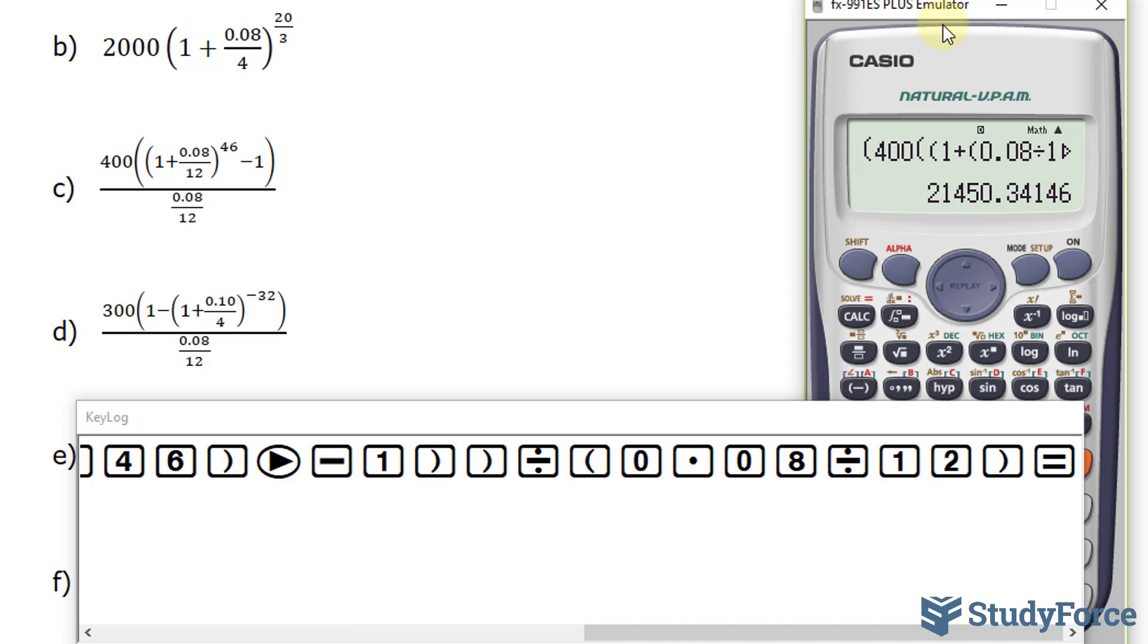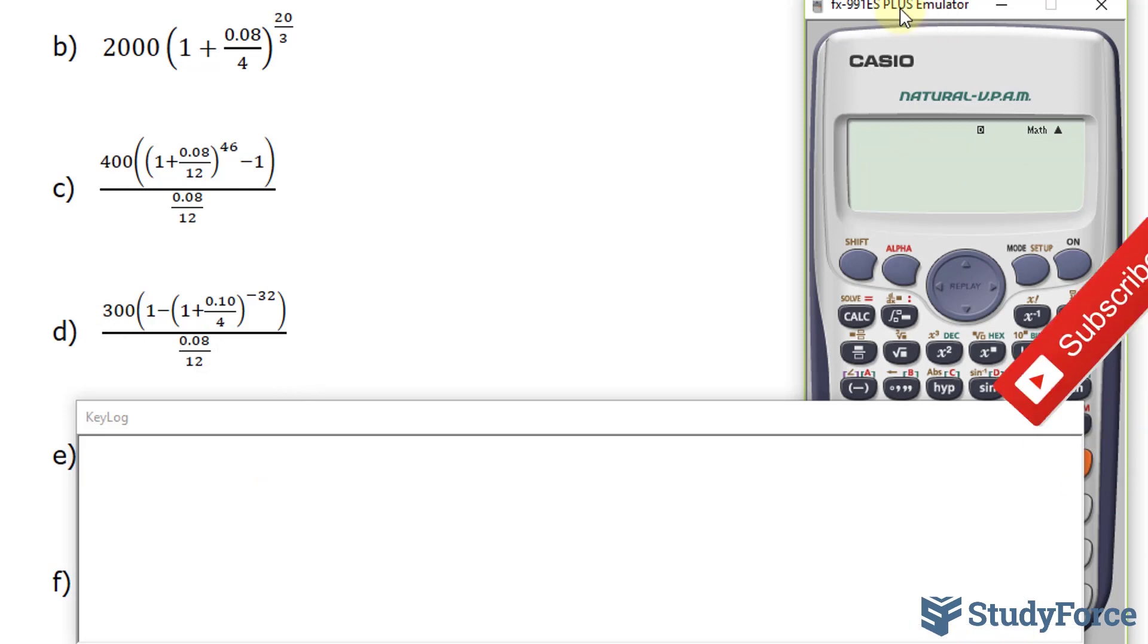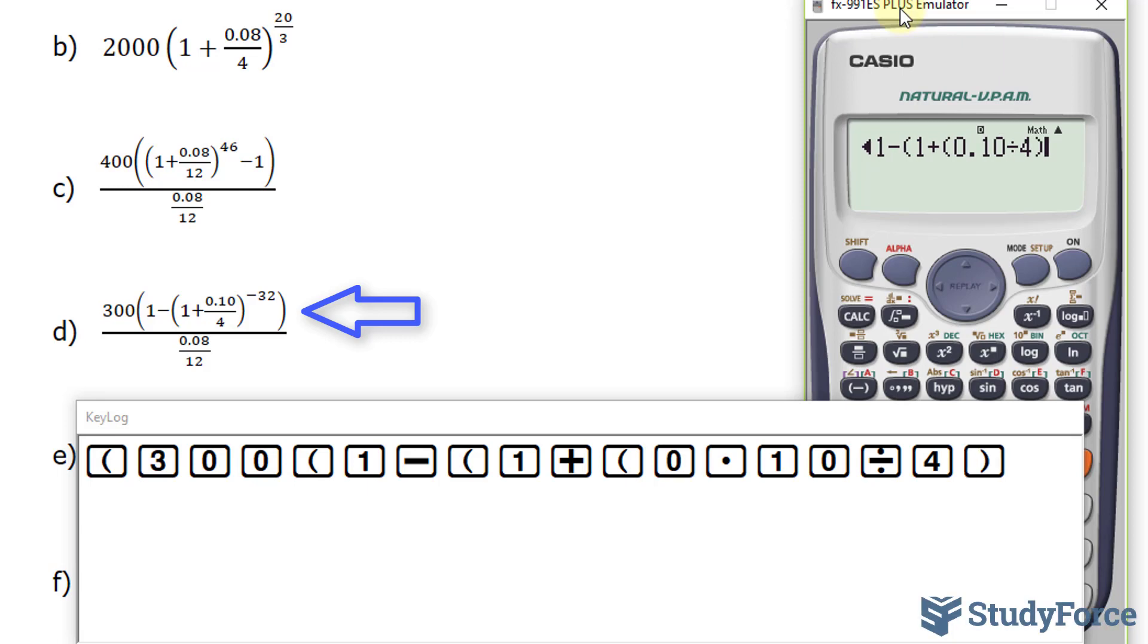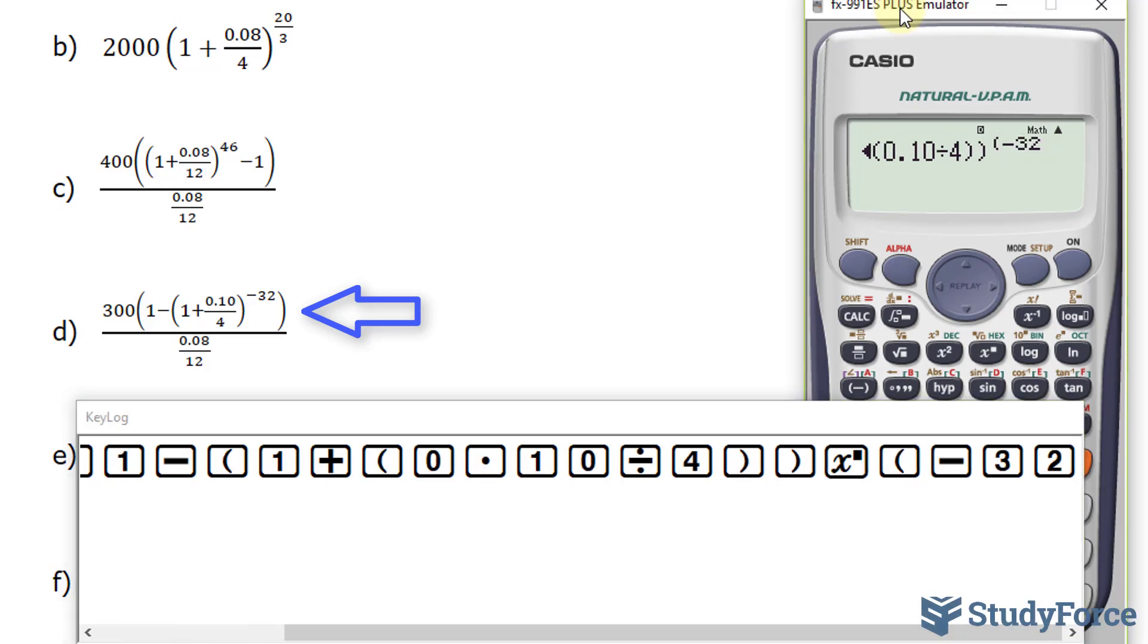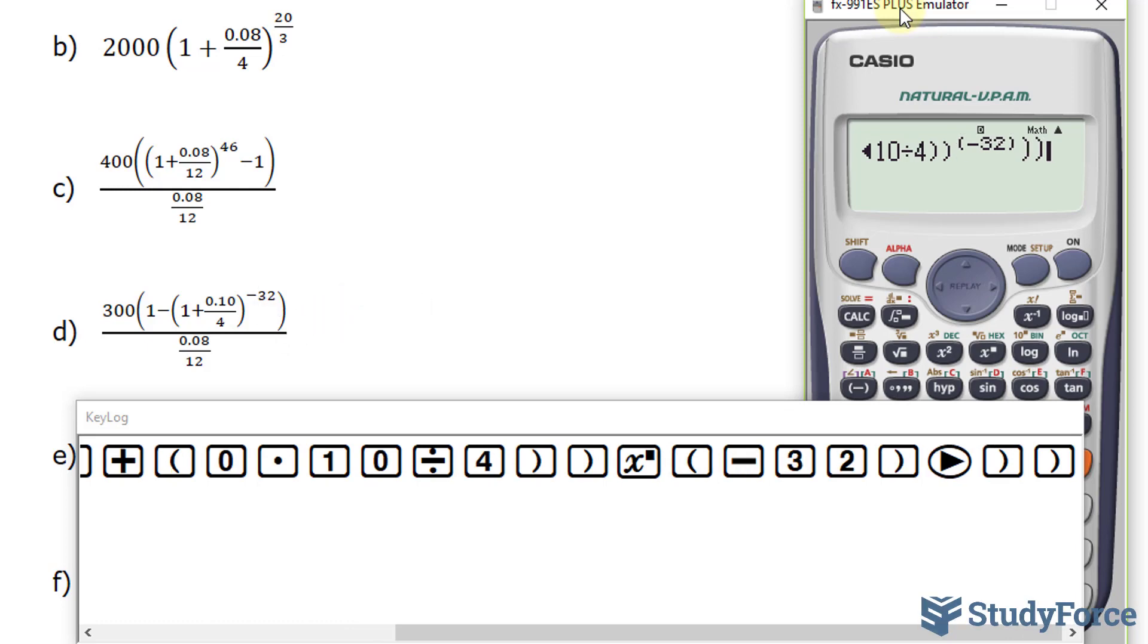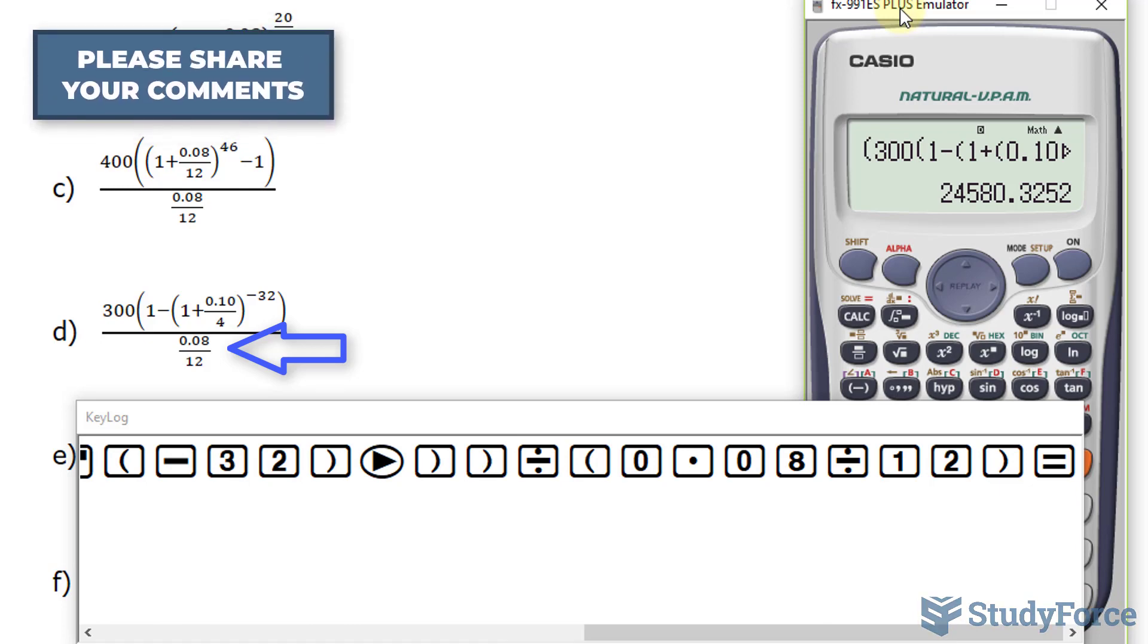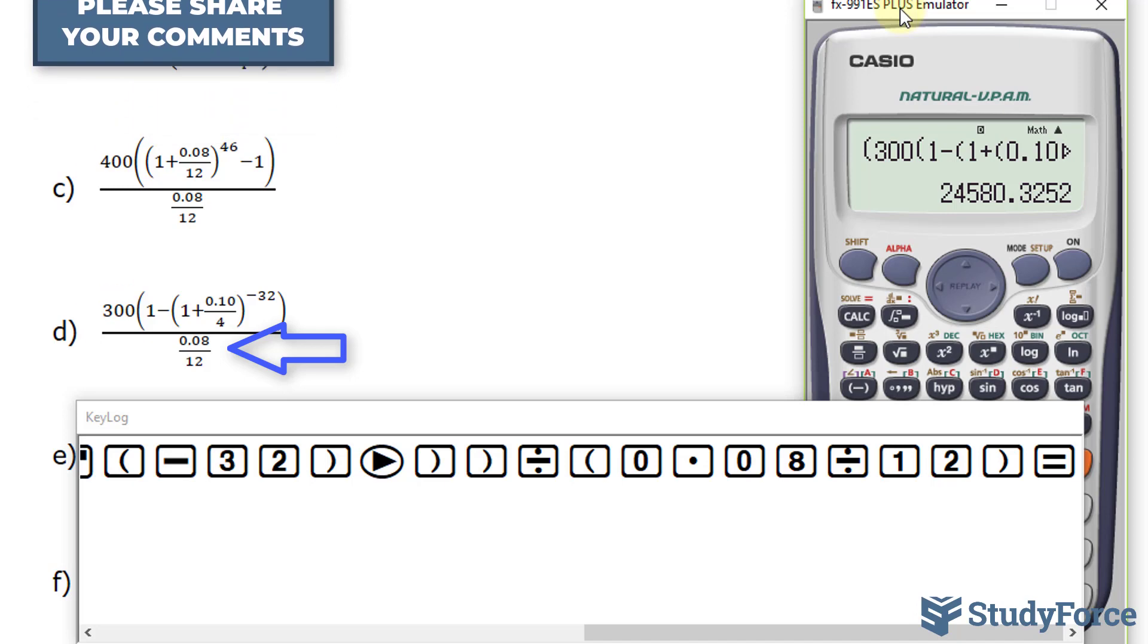Let's move on to question D. Once again, we have a numerator and a denominator. So I'm going to pretend that there are parentheses up here and parentheses down here. I'll type in bracket 300, bracket 1 minus, open bracket, 1 plus, open bracket for the fraction: 0.08 divided by 4, close, close. Raise that to the power of negative 32. Close, I'm closing this one, and then close again. Divided by 0.08 over 12, close the denominator bracket. We end up with 24,580.33 rounded to two decimal places. This should be 33.